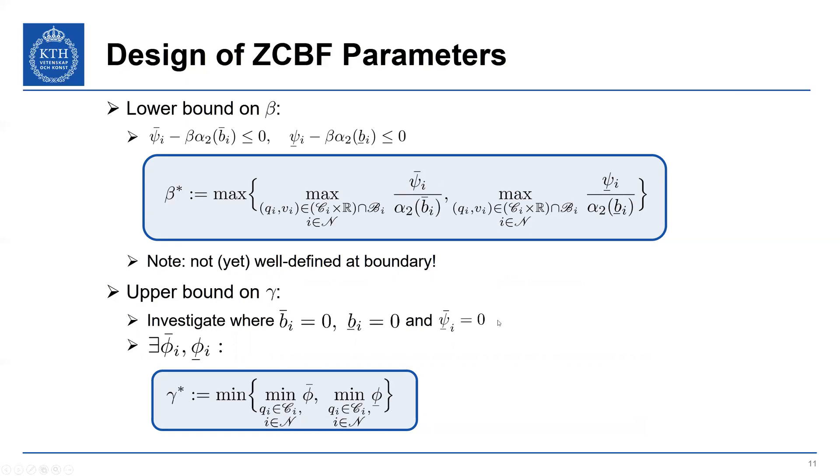And what this does is ensures that both of these terms go to negative infinity at the boundary, so that the upper bound is well-defined. So here we investigate when psi_i is equal to zero to then ensure that we can define these functions phi, bar and lower bar to upper bound our gamma star. So the intuition here is gamma dictates the velocity of the system. We're basically restricting how fast we can approach the boundary, so that we always have a control input to satisfy our constraints. That's basically the intuition.